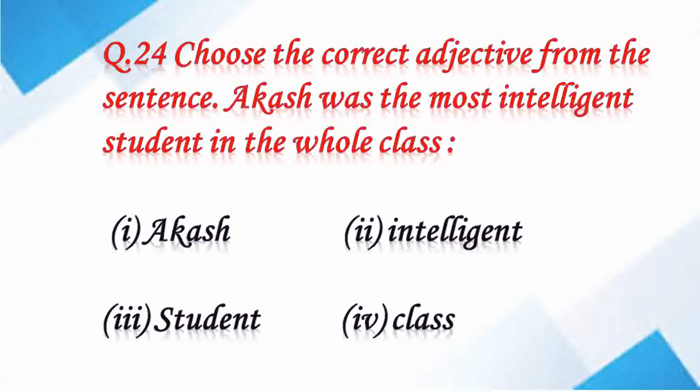Question number 24: choose the correct adjective from the sentence. Akash was the most intelligent student in the whole class. Options: Akash, intelligent, student, class. An adjective describes the quality and state of being of a noun. Here, the quality of the boy is being shown, so the right answer is intelligent.